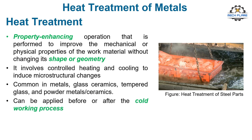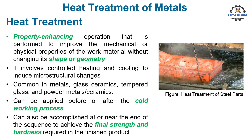Heat treatment operations can be performed on a metallic work part at various times during its manufacturing sequence. In some cases, the treatment is applied before shaping to soften the metal so that it can be more easily formed while hot. In other cases, heat treatment is used to relieve the effects of strain hardening that occur during forming, so that the material can be subjected to further deformation. Heat treatment can also be accomplished at or near the end of the sequence to achieve the final strength and hardness required in the finished product.